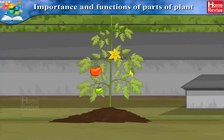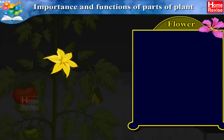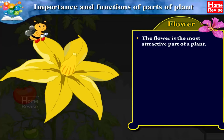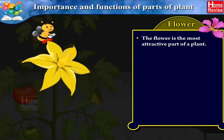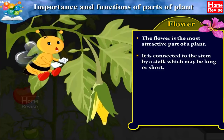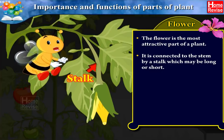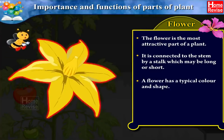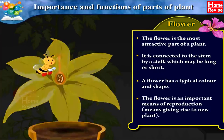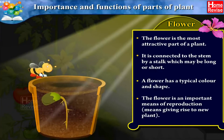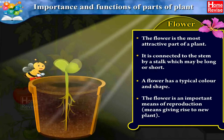The first part of the plant is the flower. The flower is the most attractive part of a plant. It is connected to the stem by a stalk, which may be long or short. A flower has a typical color and shape, and it is an important means of reproduction — meaning it gives rise to a new plant.